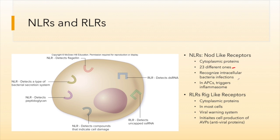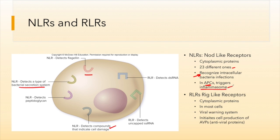There are approximately 23 different NLRs. NOD-like receptors are focused primarily on intracellular bacterial infections. They recognize bacterial secretions, flagellin, and cellular damage caused by intracellular bacteria. In antigen-presenting cells, they trigger the creation of an inflammasome — an inflammation initiation complex that initiates inflammation.